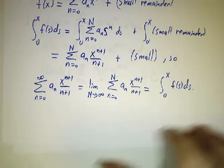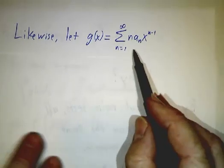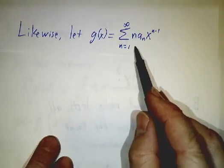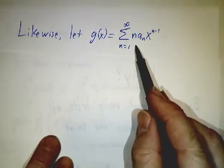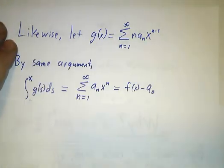Okay, that's the integral. How do we do the derivative? Well, the derivative we get by applying that argument to the derivative. So let's take this expression, which we think gives us our derivative. And to see that it's really our derivative, we integrate it. So we use the same argument as before.